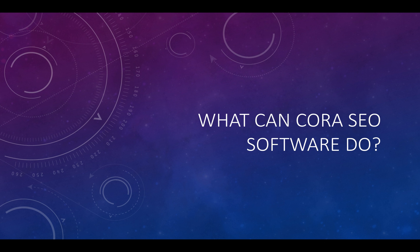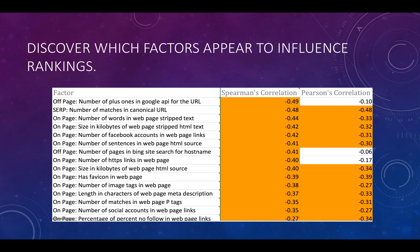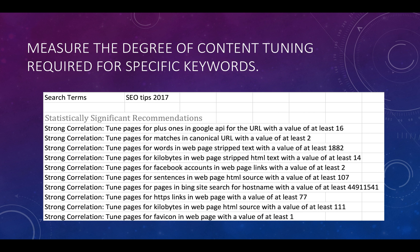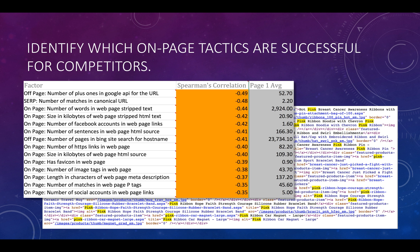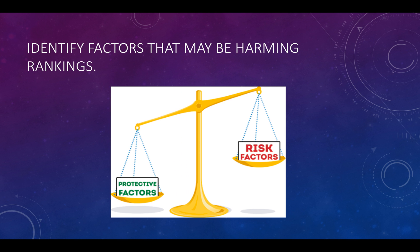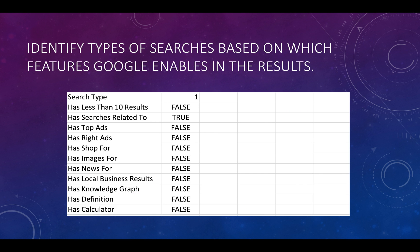What can Cora software do? You can discover which factors appear to influence your rankings. You can measure the degree of content tuning required for specific keywords. You can identify which on-page tactics are successful for your competitors. You can identify any factors that may be harming your rankings.